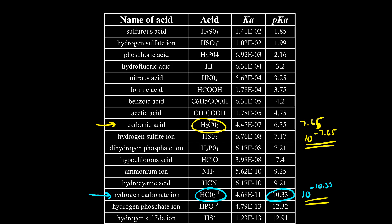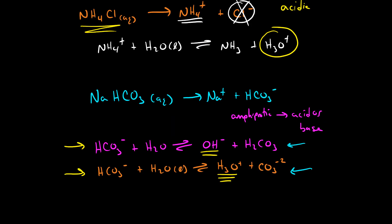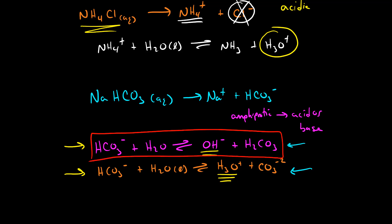This is our base dissociation constant, and this is our acid dissociation constant. Since the Kb value is larger, this means bicarbonate is a better base than it is an acid. So the base dissociation reaction has the larger equilibrium constant, meaning the concentration of hydroxide produced will be larger than the concentration of hydronium. When you dissolve sodium bicarbonate in water, you create a basic solution — not an acidic one — because bicarbonate is a better base than it is an acid.